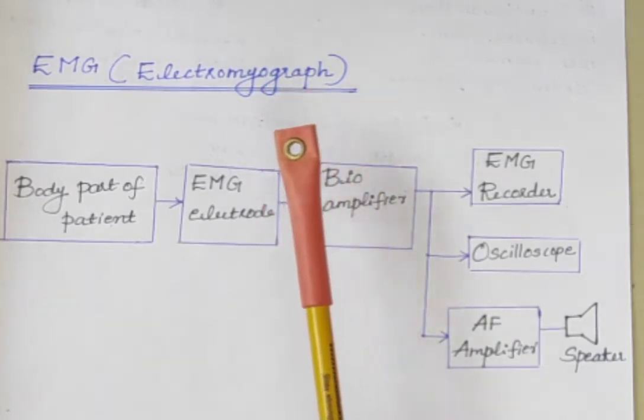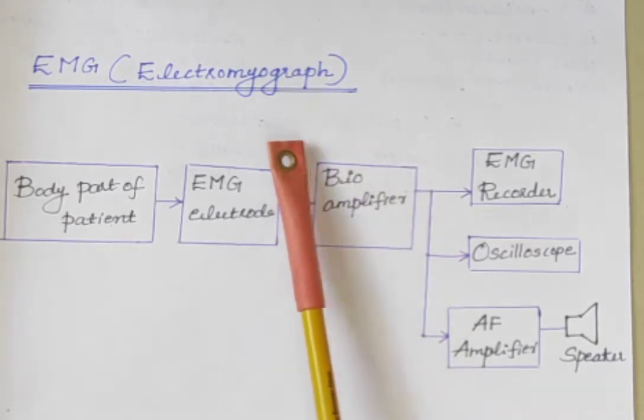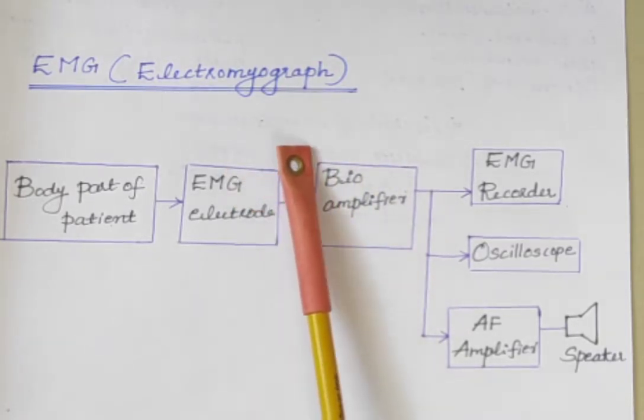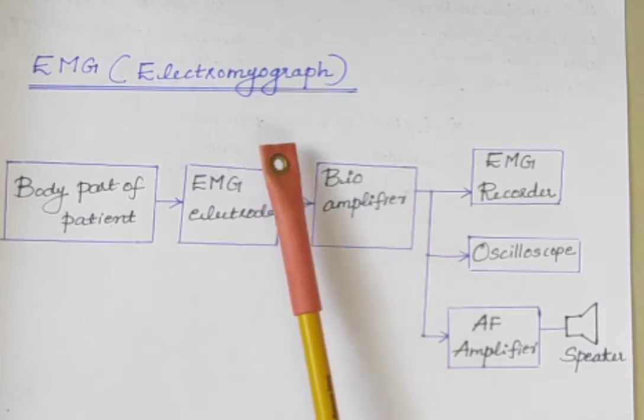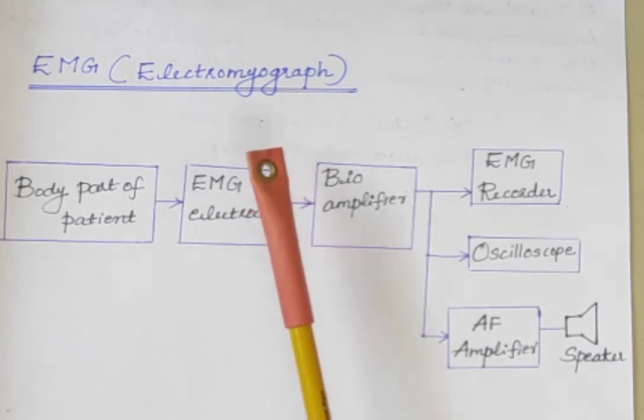Mainly there are two kinds of EMG measurement. The first method is using surface electrodes and the second one is using needle electrodes.